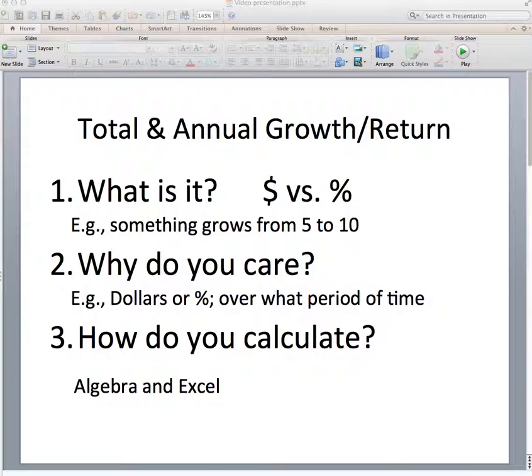It can be expressed in dollars or percentages. So for example, if something like a stock price grows from $5 to $10, that's $5 growth or 100% growth.